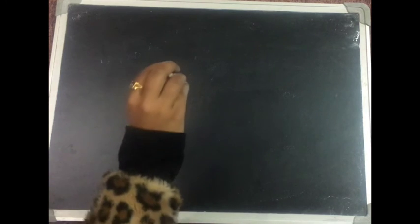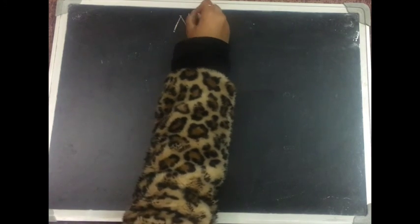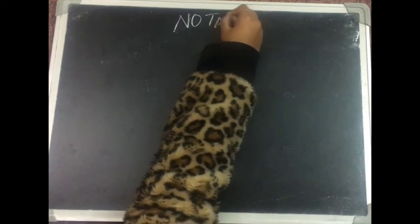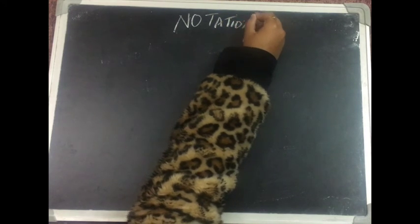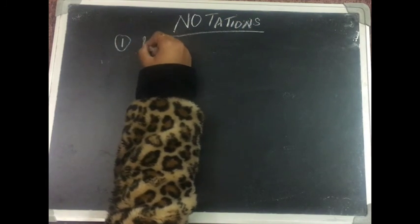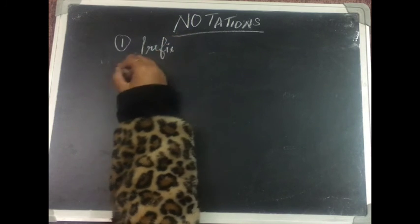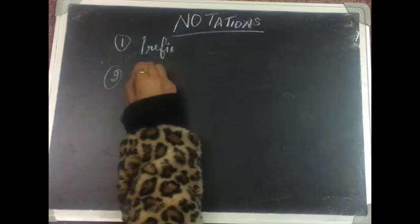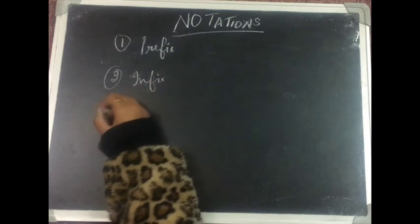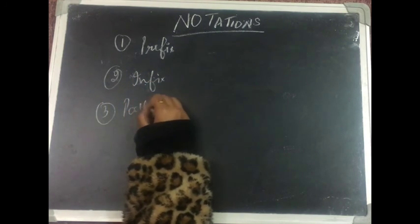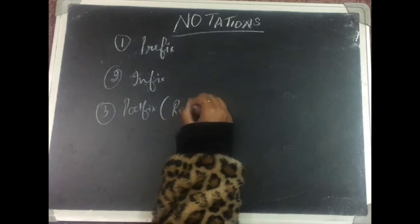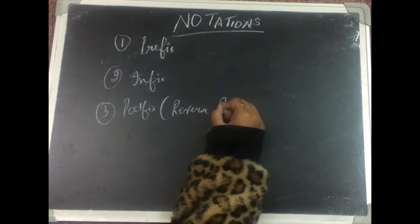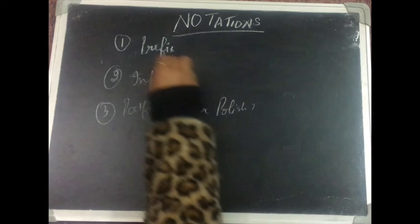Hello everyone. In this video we are going to discuss arithmetic notations. We have three types: first is the prefix, then the infix, and then the postfix. The postfix is also known as the reverse Polish notation.